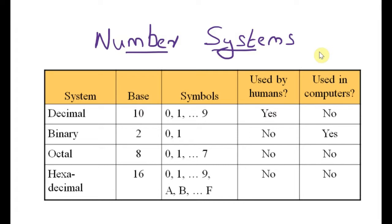This session we will learn about number systems. There are mainly four different types of number systems: the first one is the decimal number system, then we have the binary number system, the octal number system, and the hexadecimal number system. We will see the differences among these number systems today.